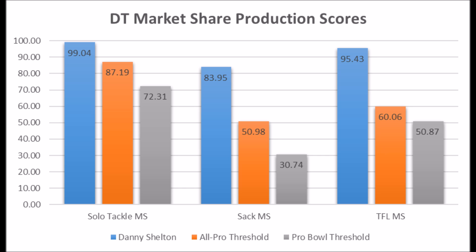When you get to his athleticism data, this is the only area of concern Danny Shelton had coming out of college. He had a 91.75 explosive lower body strength score, a 9.01 speed score, and a 51.67 flexibility score. Based on my data since 1999, there's never been a long-term starter with less than an 11.41 speed score. That was the only major question mark with Danny Shelton.